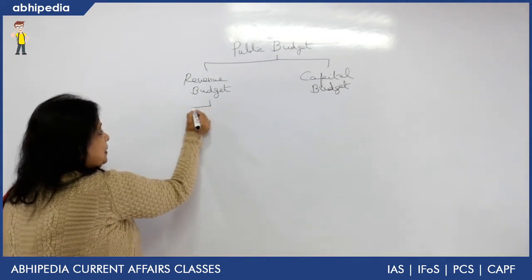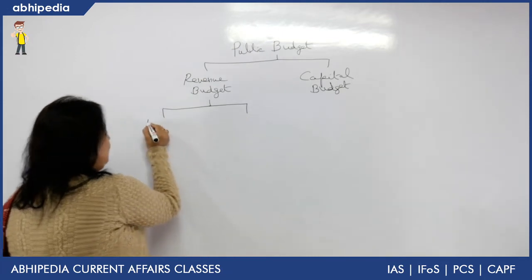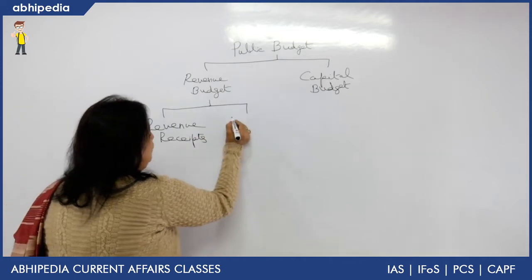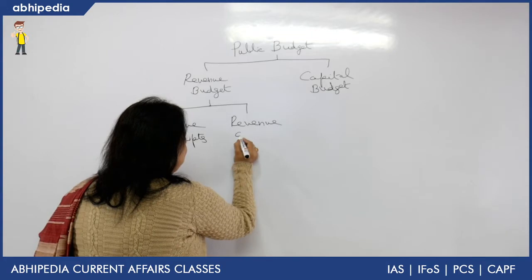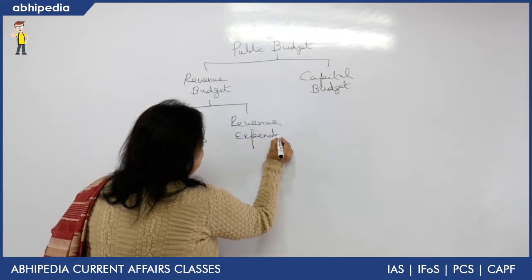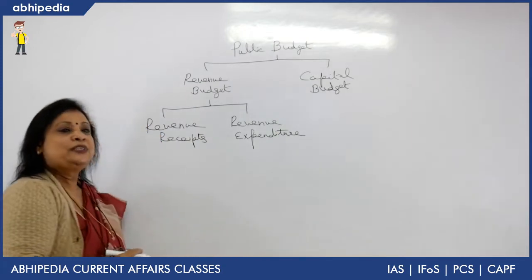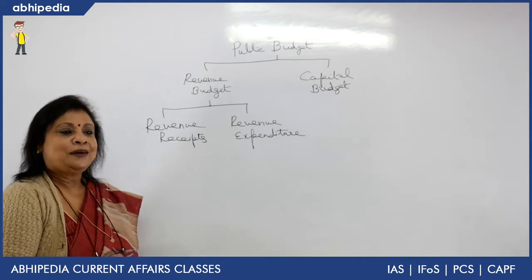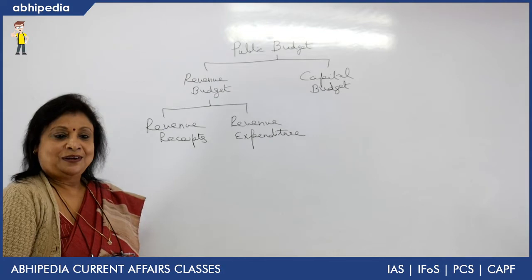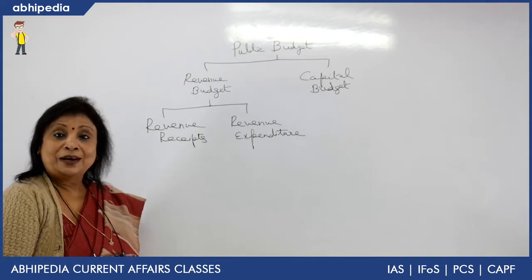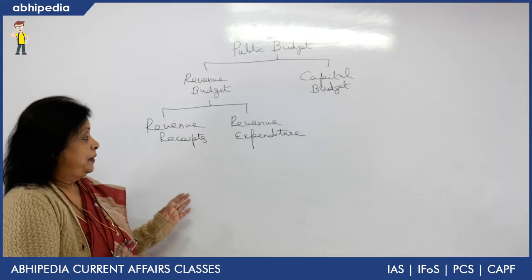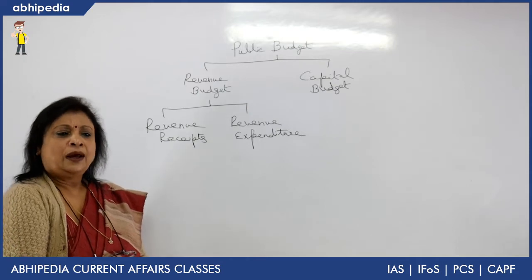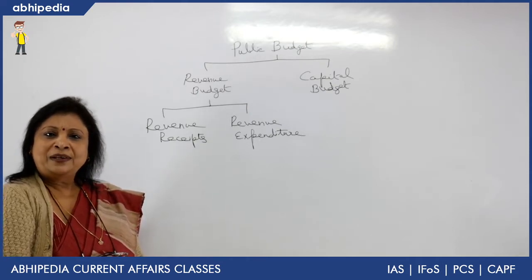Revenue budget has two aspects: revenue receipts and revenue expenditure. Under revenue receipts, we have tax receipts and non-tax receipts. Tax receipts are income the government gets from income tax, GST, sales tax, custom duties, excise duties, etc. Non-tax revenue includes various kinds of fees, miscellaneous fees, fines, and income from public enterprise.